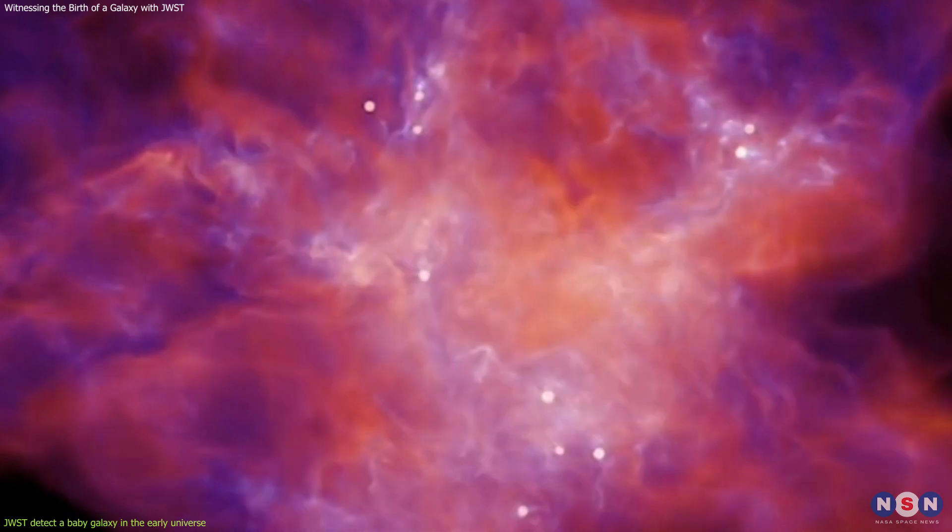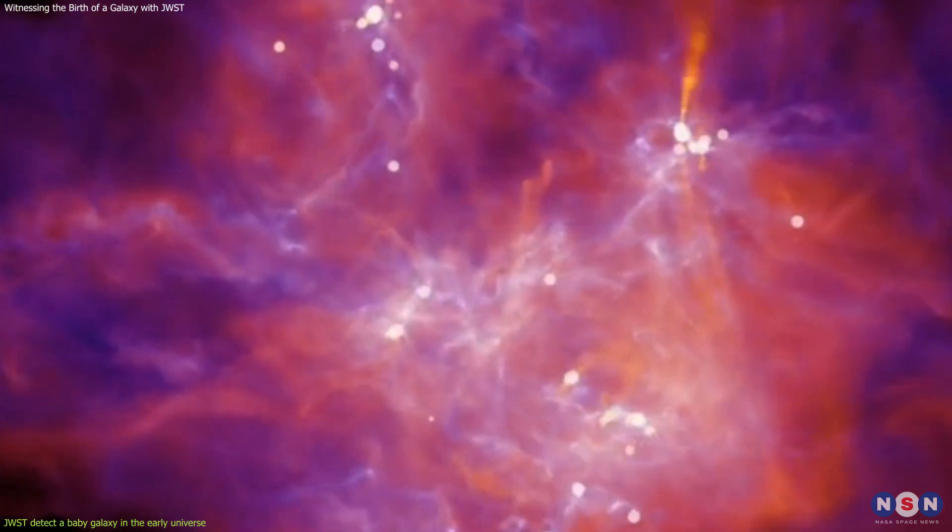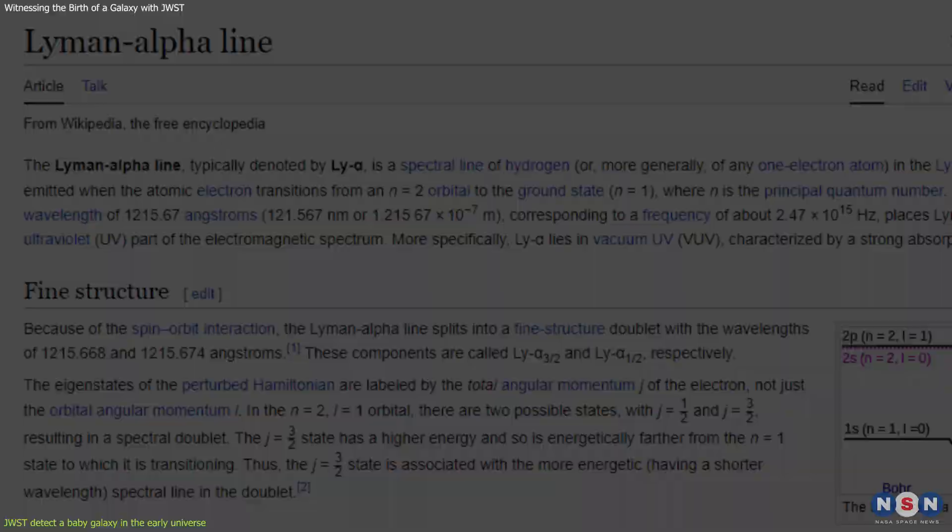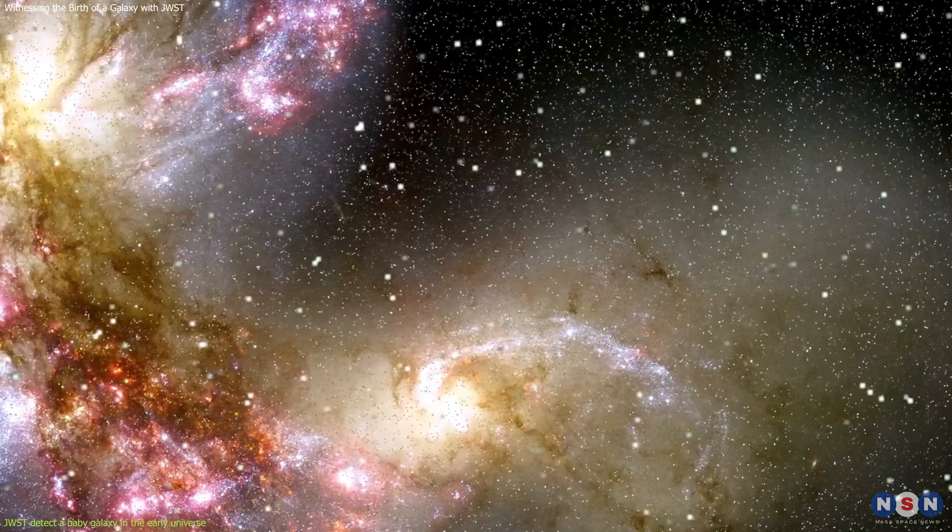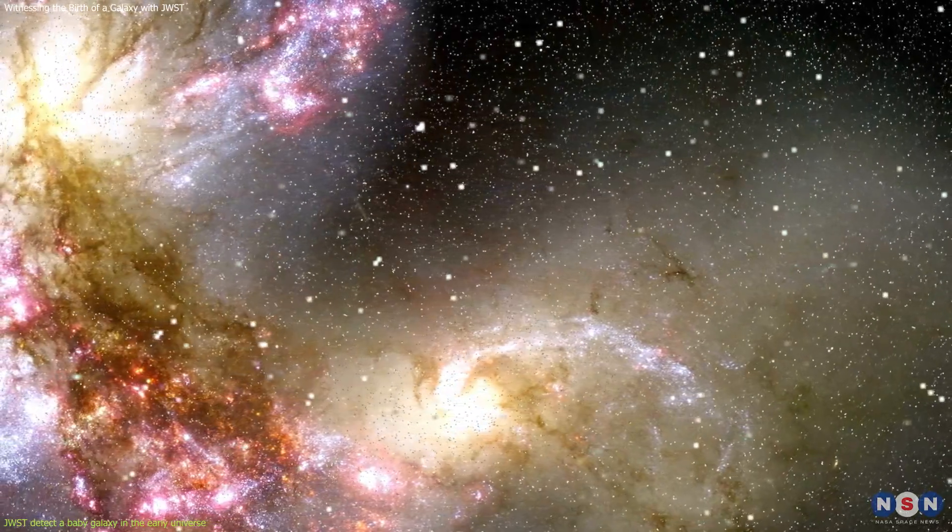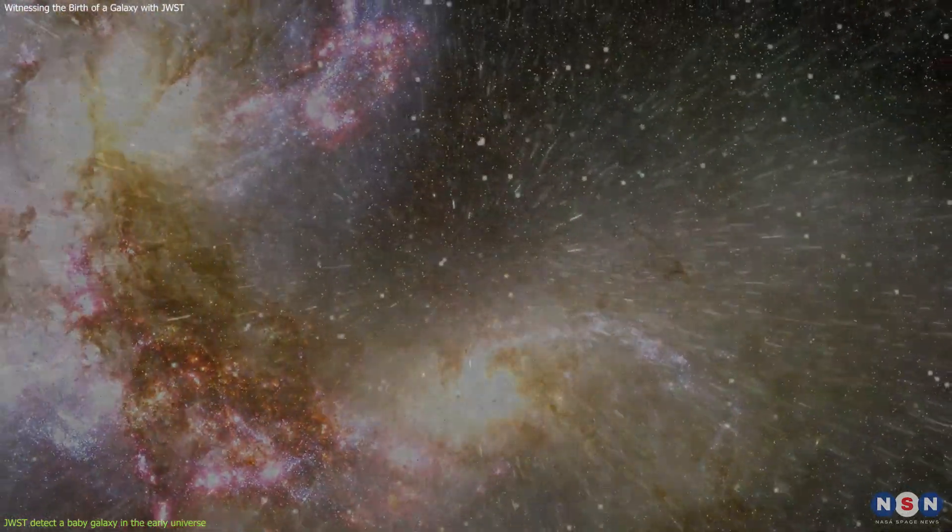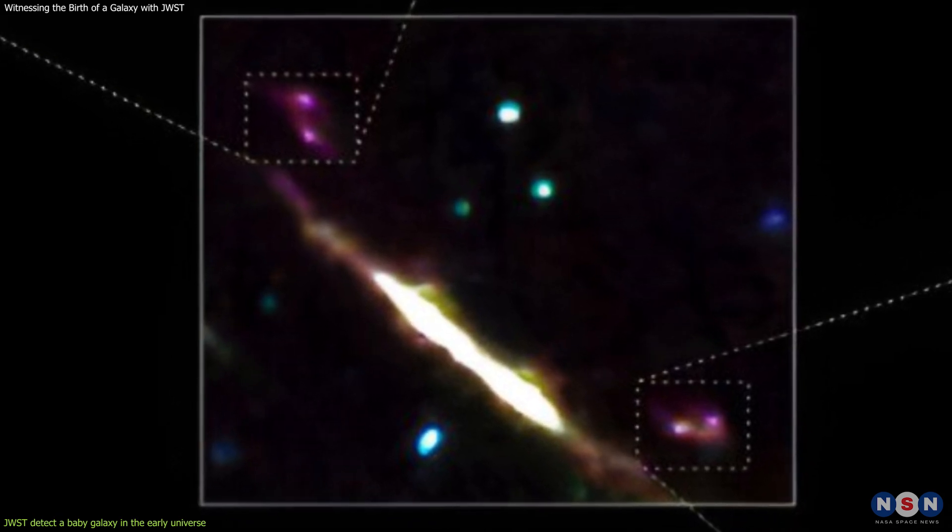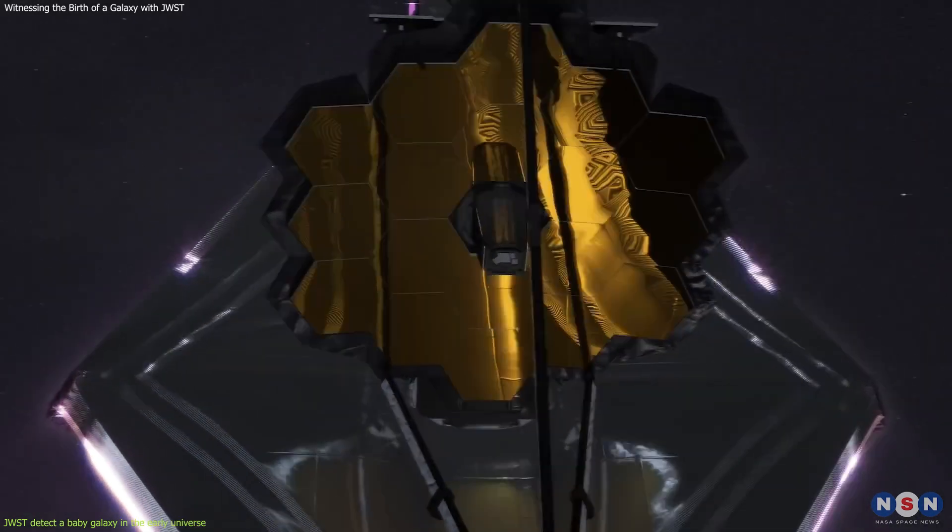The hydrogen gas is ionized by the radiation from the stars, creating a bubble of plasma that emits light at a specific wavelength called Lyman Alpha, which is usually very hard to observe from such distant galaxies because it is absorbed by the intergalactic medium along the way. But thanks to the gravitational lensing effect, which boosts its brightness and shifts its wavelength, James Webb was able to capture it clearly.